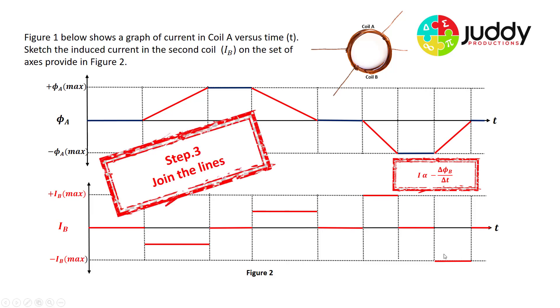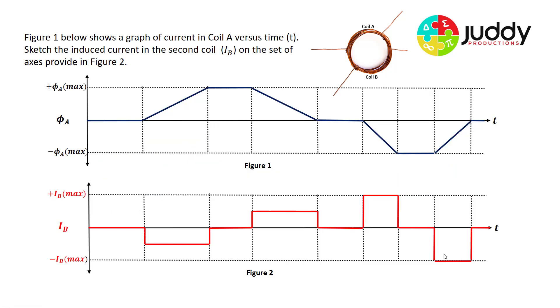Let's join the lines. And there we have it — this is what the induced current in the second coil B would look like as a result of the changing magnetic flux, or the changing current, in the first coil A.